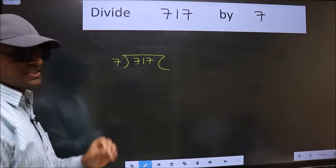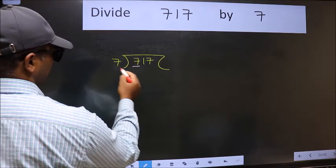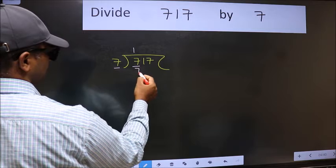This is your step 1. Next, here we have 7 and here 7. When do we get 7 in 7 table? 7 once 7.